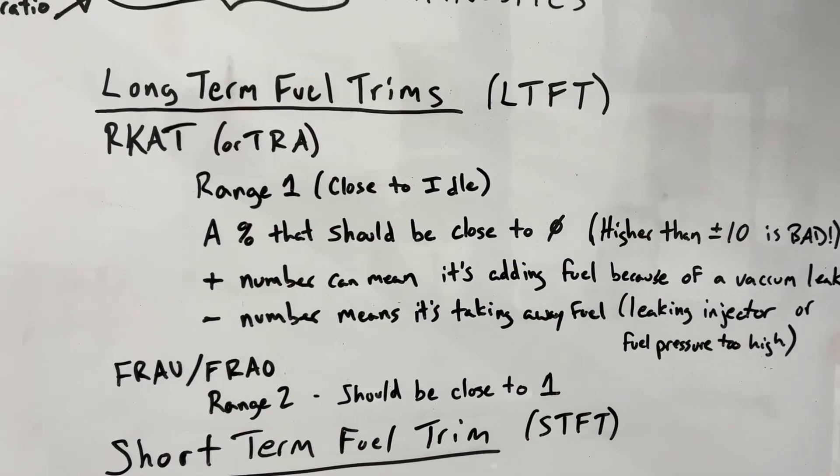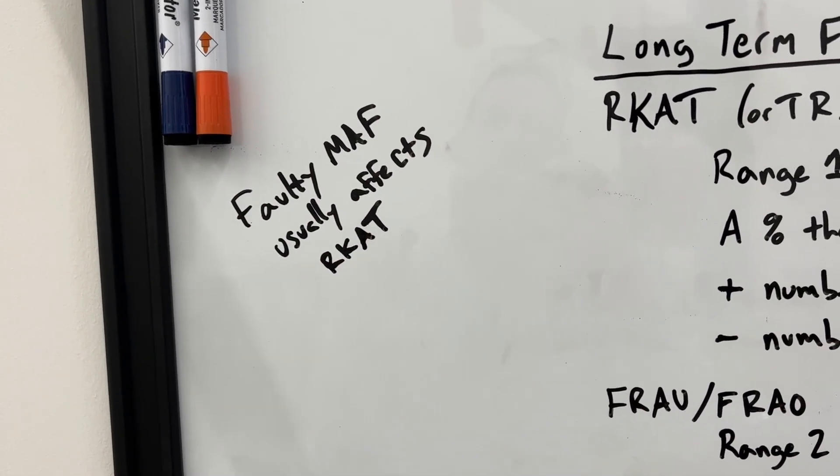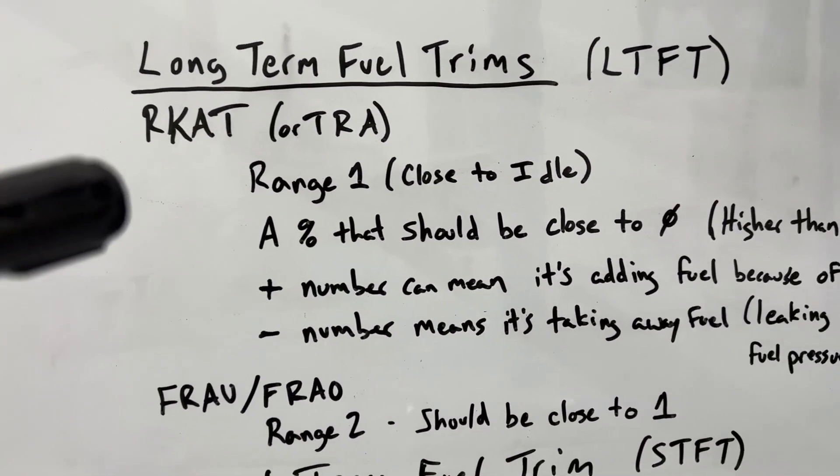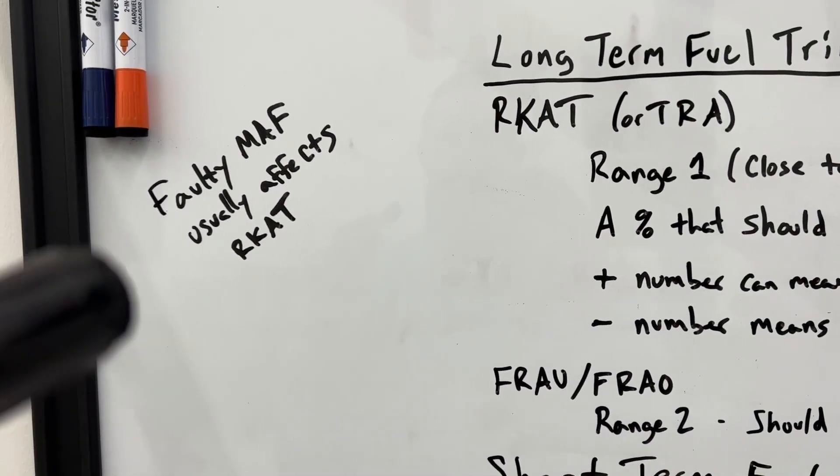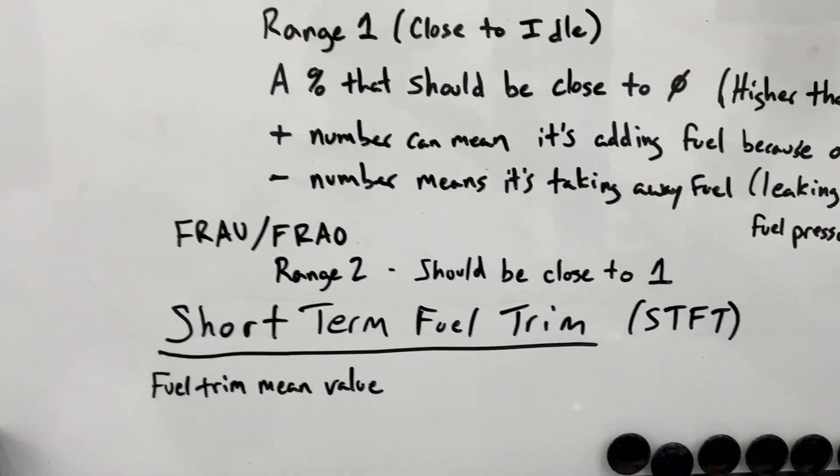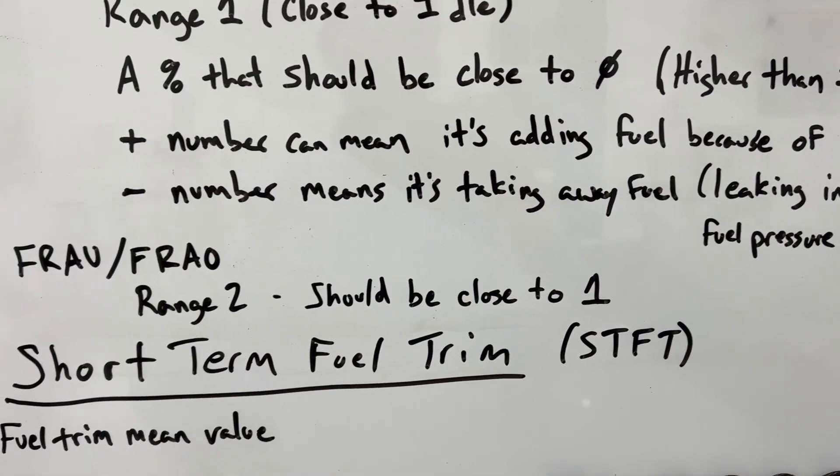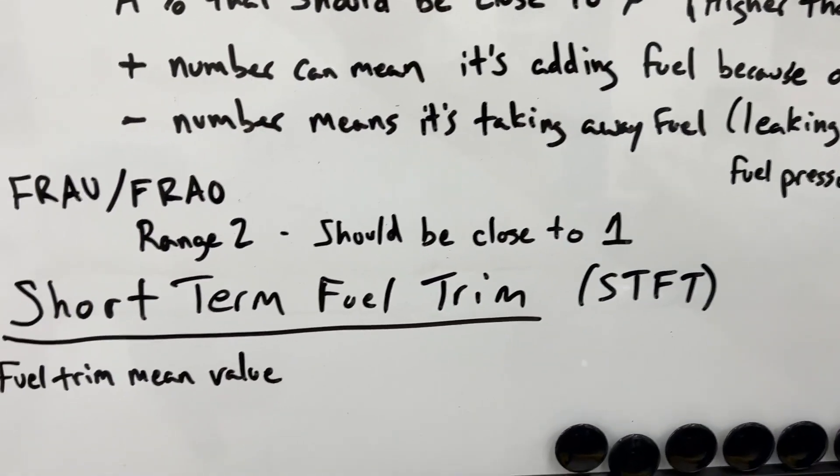I also read that a faulty mass airflow sensor is usually going to affect the RCAT ranges. So if you've got crazy RCATs, that might point to a faulty mass airflow sensor. So that might come into play on my car later. Now for the range two, all I know about these is that it says it should be close to one, but I don't see those anywhere.